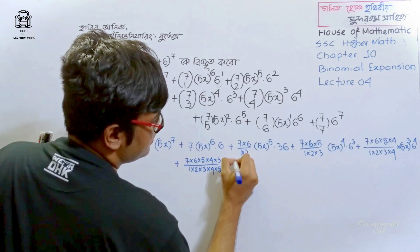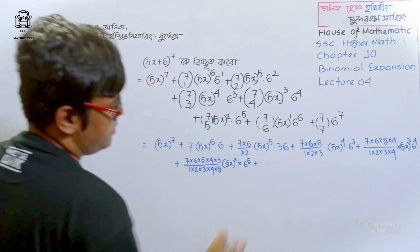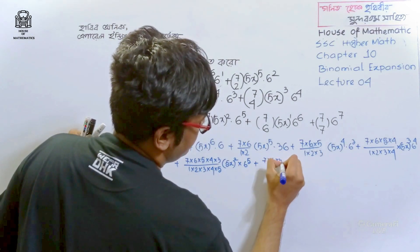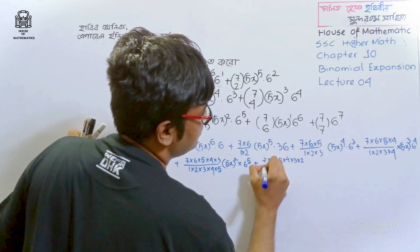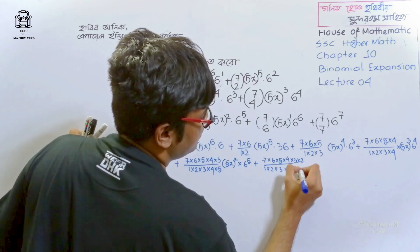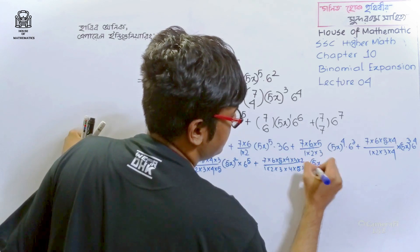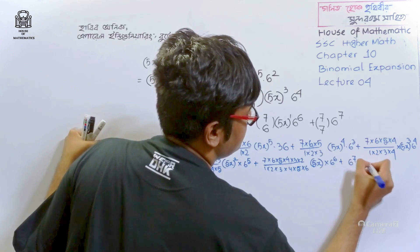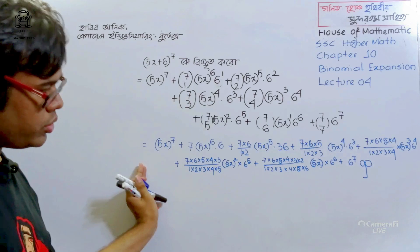5x squared into 6 to the power 5, plus the next term, then 5x plus 6 to the power 6, and finally 6 to the power 7.